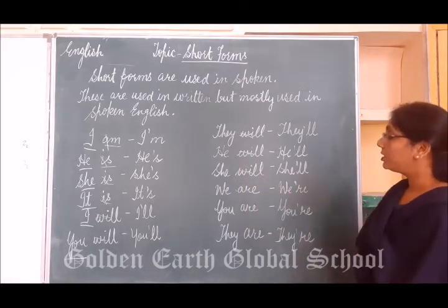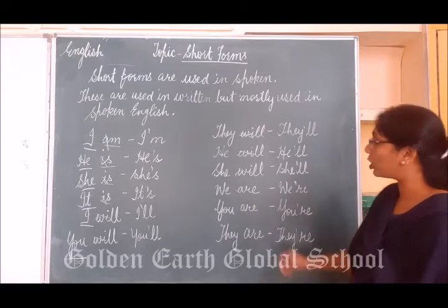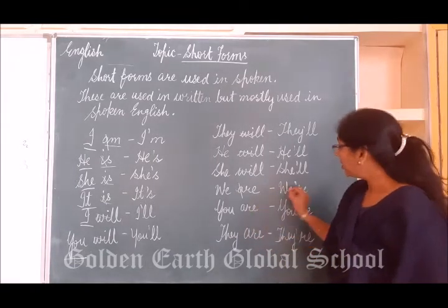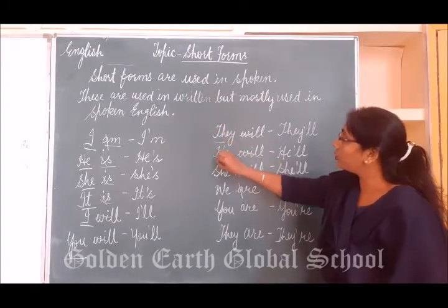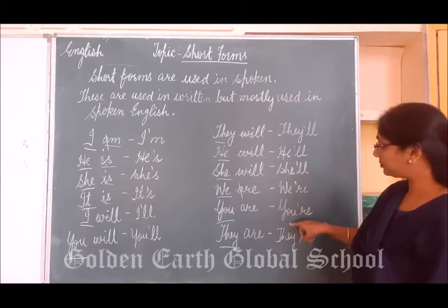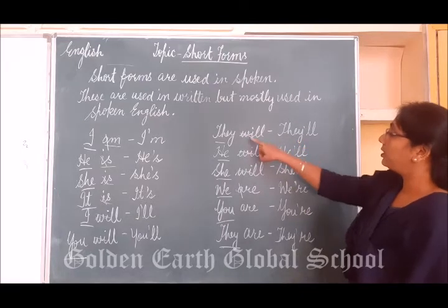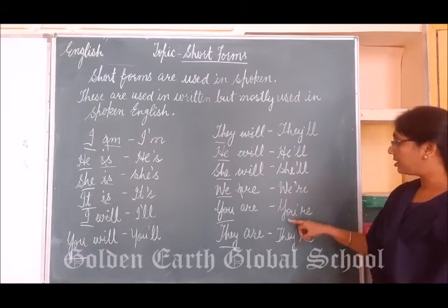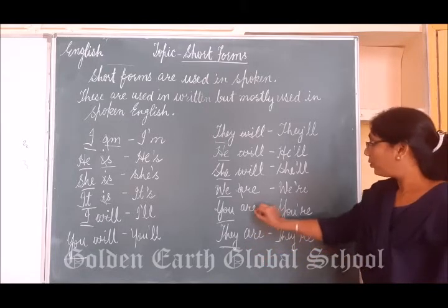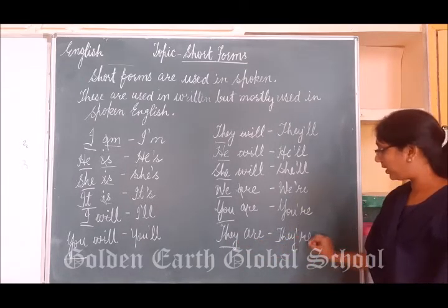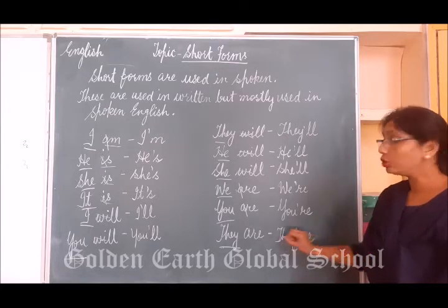'We are' — in 'are', which letter are we going to drop? 'A'. So 'we are' becomes 'we're'. Here also we write all the pronouns the same way. 'They are' — drop the 'a', so 'they are' becomes 'they're', not 'they are'.